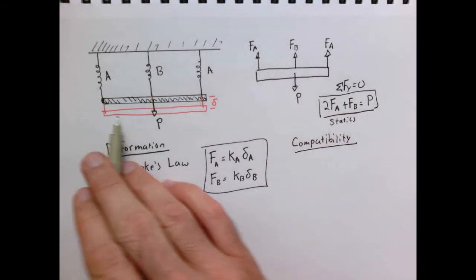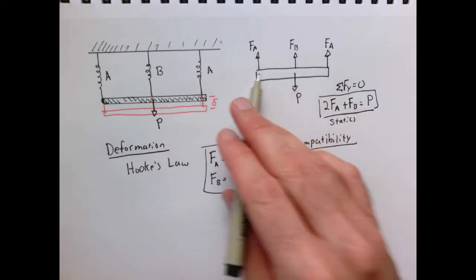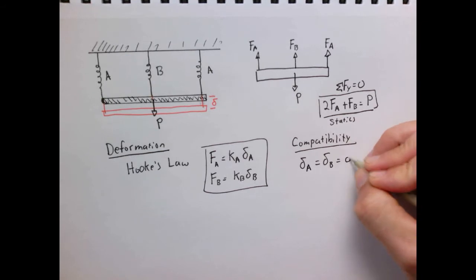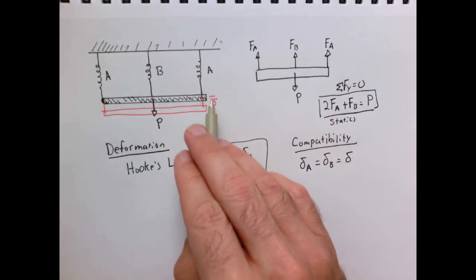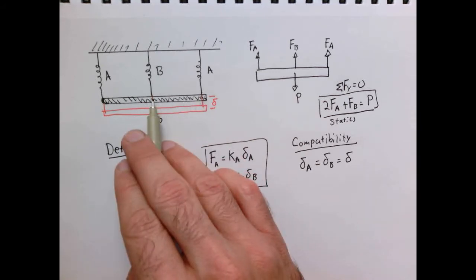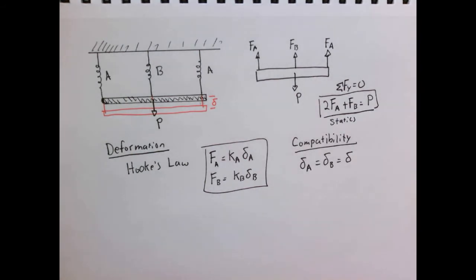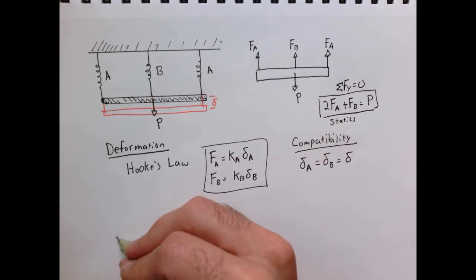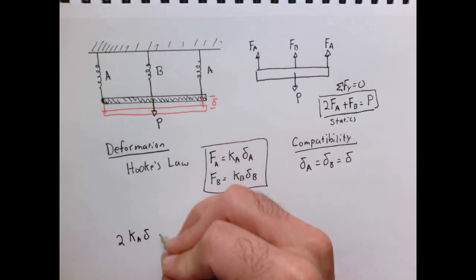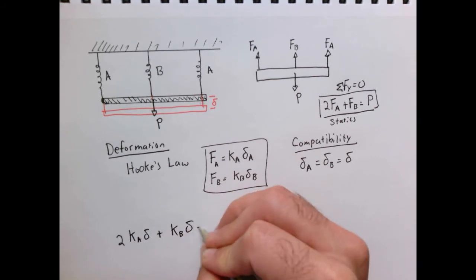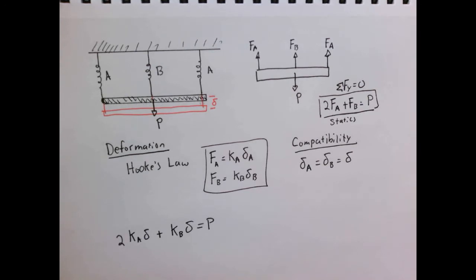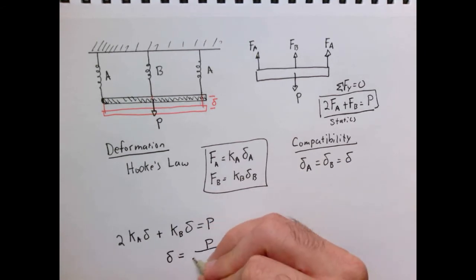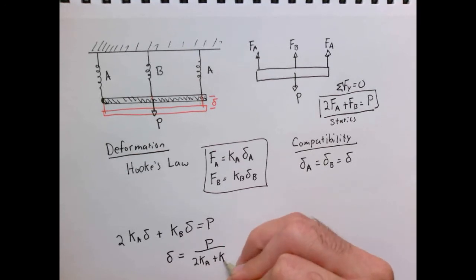Now we can put all this together — we have enough information to solve the problem. Taking the spring laws and substituting into the statics equation, we get a combined relationship. Factoring this out, we arrive at: δ = P / (2·k_A + k_B).